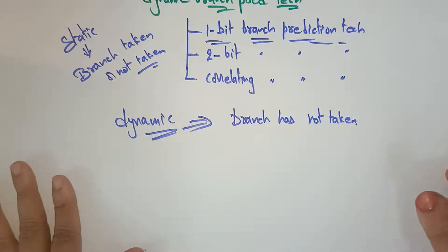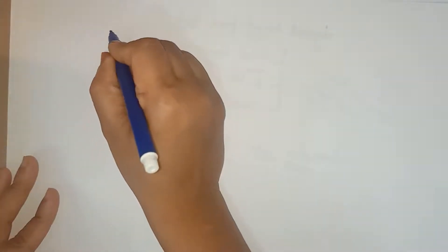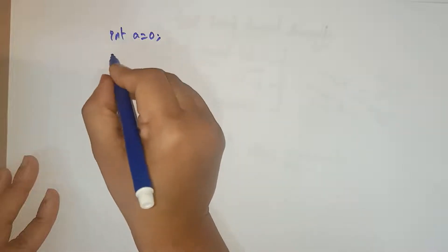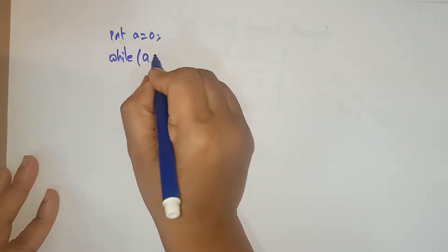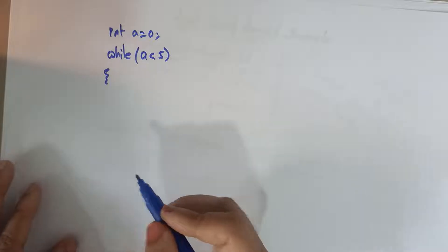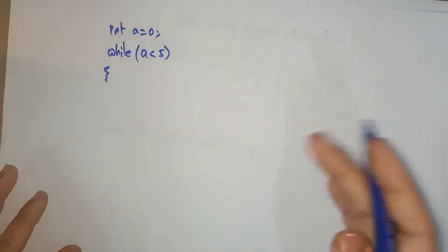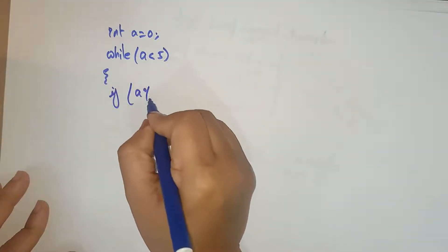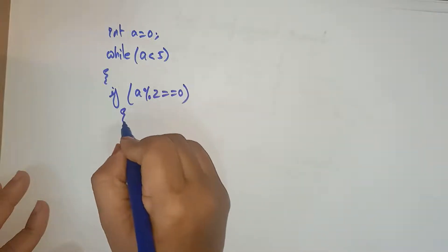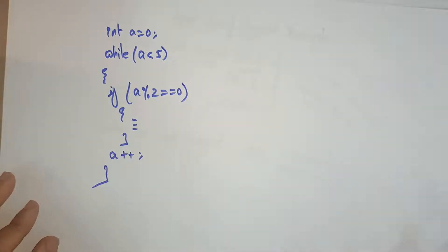Let me explain the one-bit branch prediction technique using an example — the same code from the static branch prediction video. The code is: int a = 0; while (a < 5) — this is the branch condition, either taken or not taken. If a modulo 2 equals 0, execute those instructions and increment a, then exit the loop.